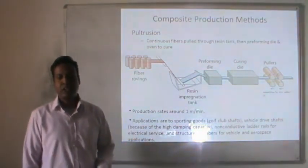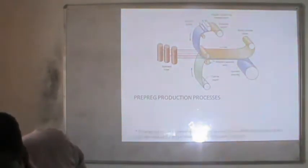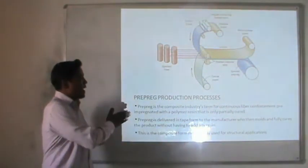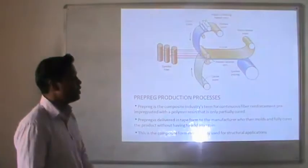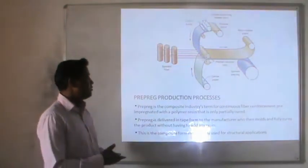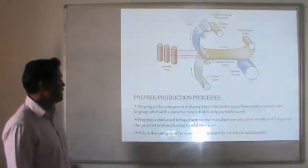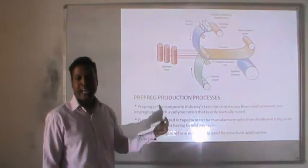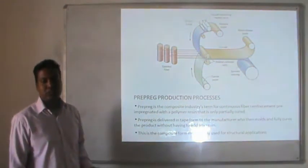The pre-preg production process: 'pre-preg' is the composite industry term for a fiber reinforcement pre-impregnated with polymer resin that is partially cured. The pre-preg is delivered in tape form. The manufacturer can then fully cure the product without having to add any additional resin. This is the composite form most widely used in structural applications. The process involves spooled fiber combined with heated resin from a hopper, plates that maintain the fiber thickness, and spooled pre-preg as the output.